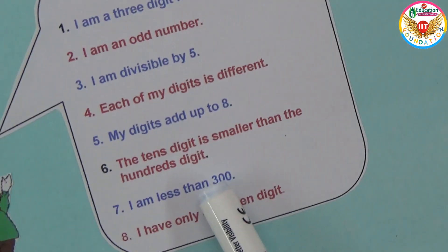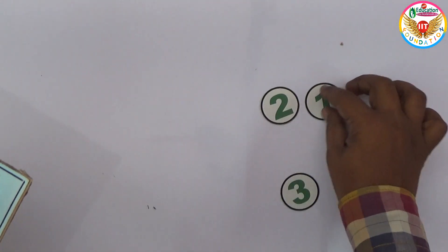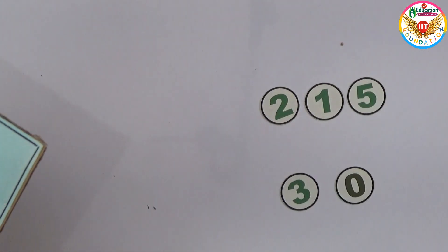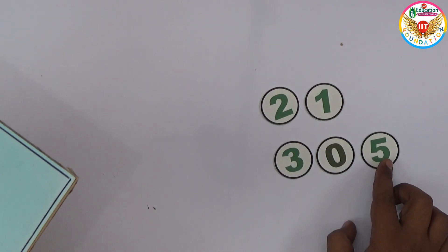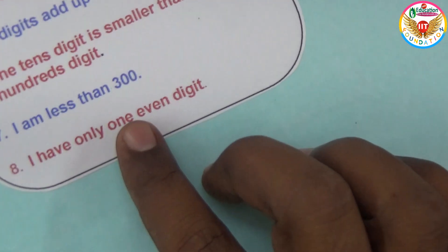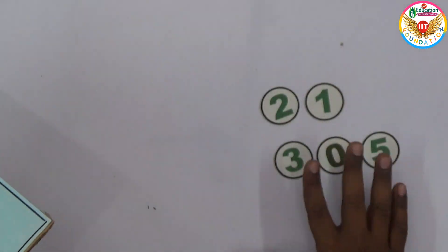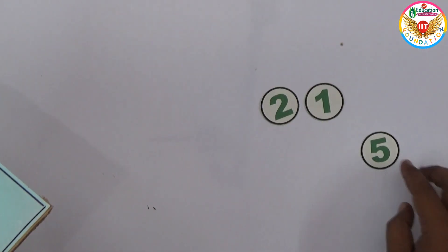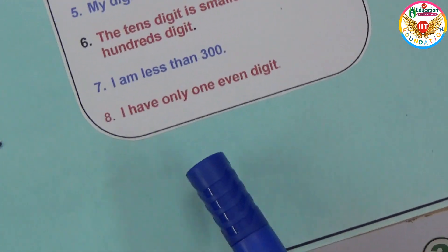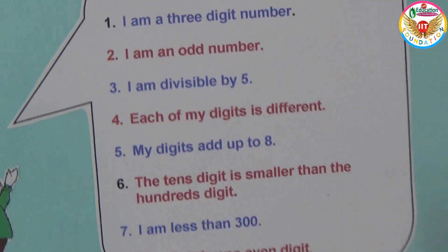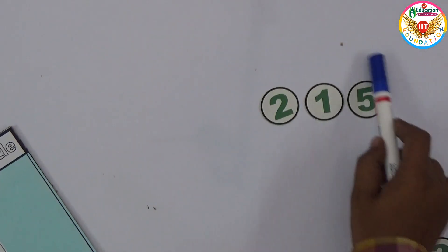The clue says I am less than 300. So 305 is eliminated, leaving only 215. The final clue says I have only one even digit — in 215, the only even digit is 2, which confirms the answer. The answer is 215.